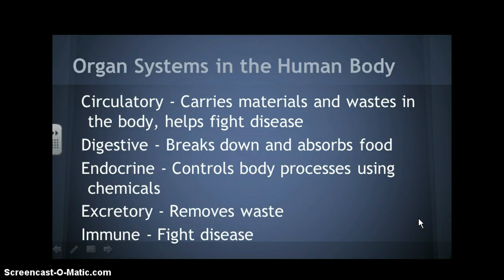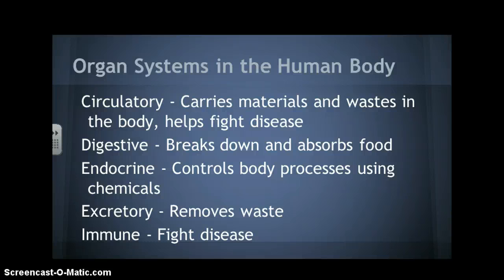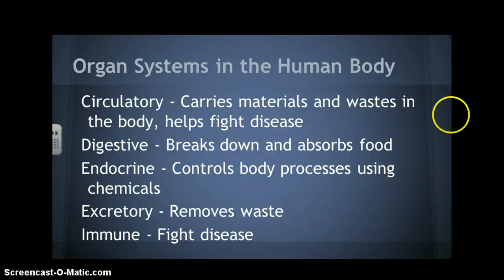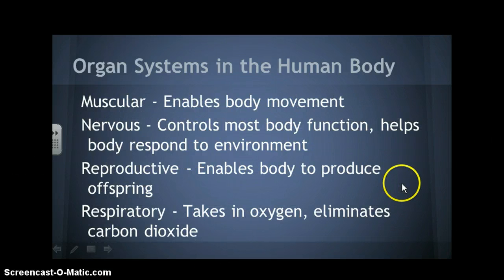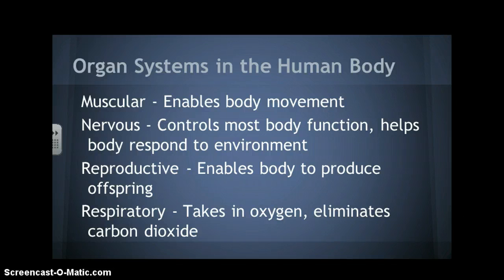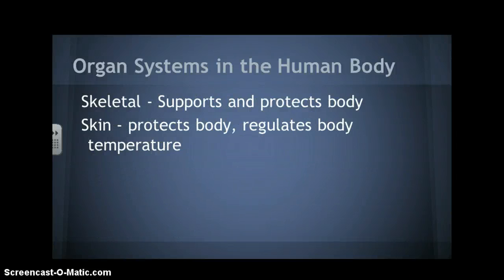We're going to go through the organ systems in the human body — you will need to know these, and we'll be talking about each in class. The circulatory system carries materials and wastes around the body and helps fight disease. The digestive system breaks down and absorbs food for energy. The endocrine system controls body processes using chemicals. The excretory system removes waste. The immune system fights disease and prevents infection. The muscular system enables body movement. The nervous system controls most body functions and helps the body respond to the outside environment. The reproductive system enables the body to produce offspring. The respiratory system takes in oxygen and eliminates carbon dioxide. The skeletal system supports and protects the body. And the skin protects the body and regulates body temperature.